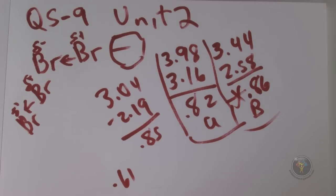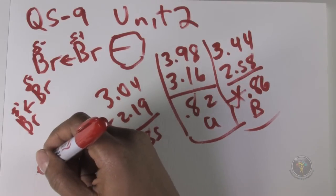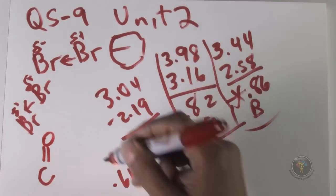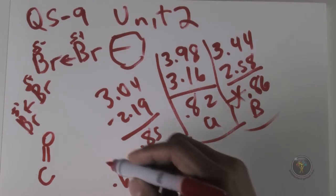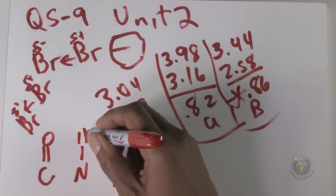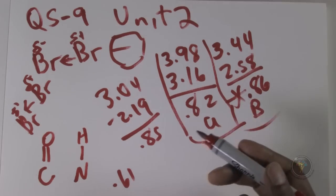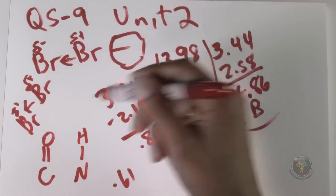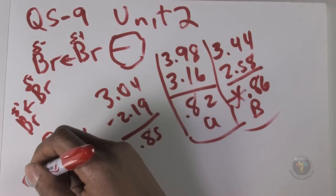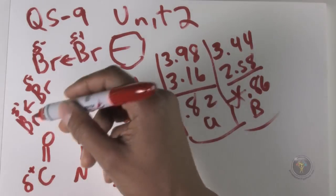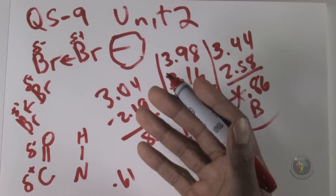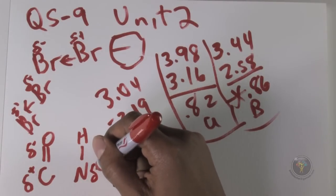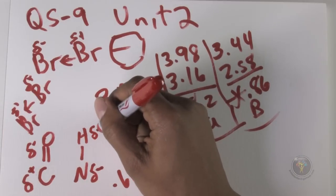Moving on to Question 6. In one part of a molecule you have a carbon-oxygen double bond — the carbonyl functional group in organic chemistry. In the other part there is a nitrogen-hydrogen single bond. From organic chemistry you'd know right away that oxygen is to the right in the periodic table, carbon is to the left, so carbon will be delta positive and oxygen delta negative. Nitrogen is to the right of hydrogen in the periodic table, so nitrogen is more electronegative and hydrogen is more electropositive.